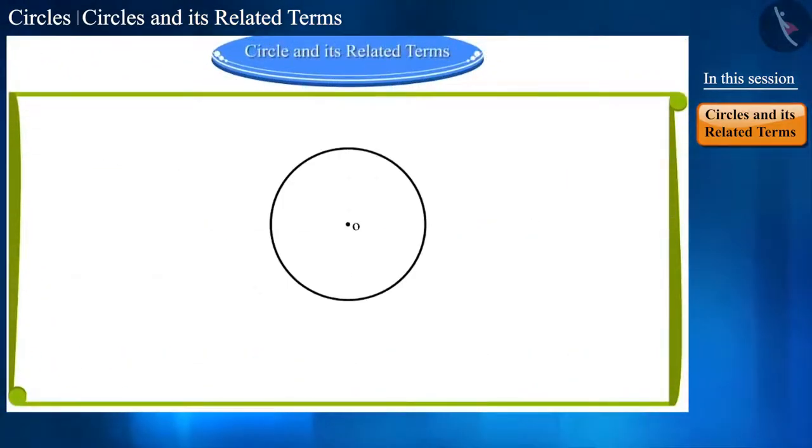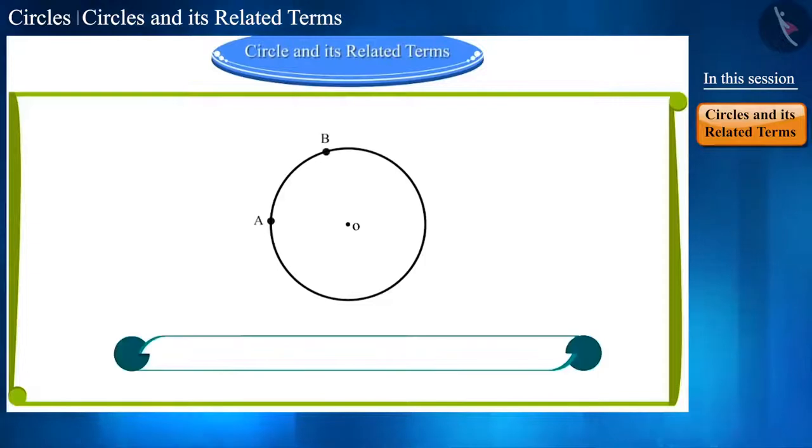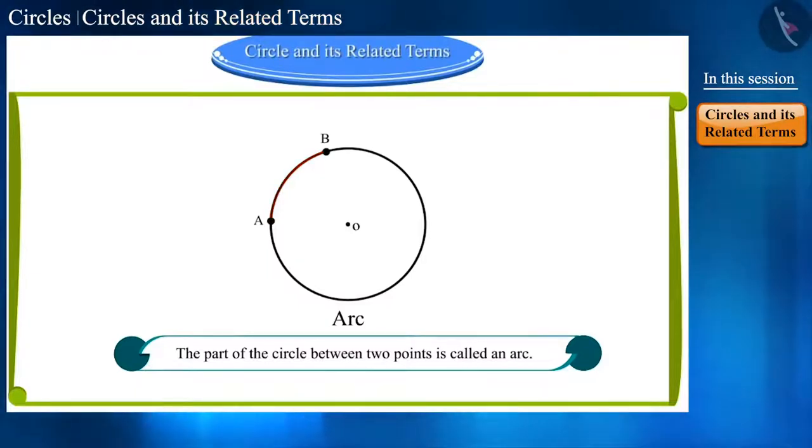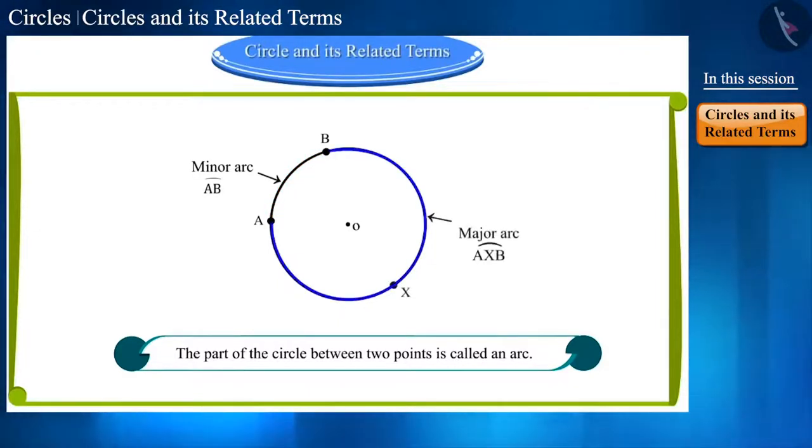If we take two points on a circle like this, then the part between these two points is called an arc. Friends, there are two parts here. The small part is called minor arc. And the large part is called major arc.